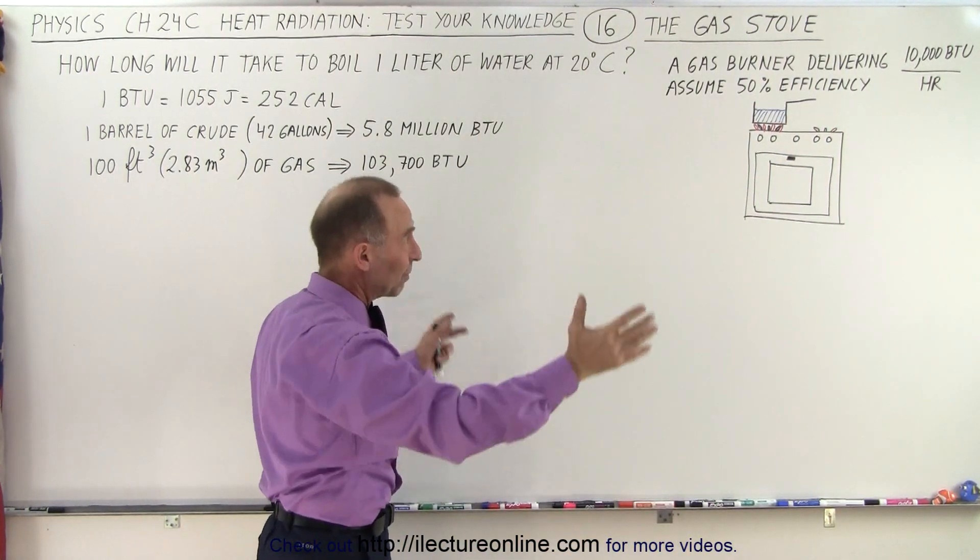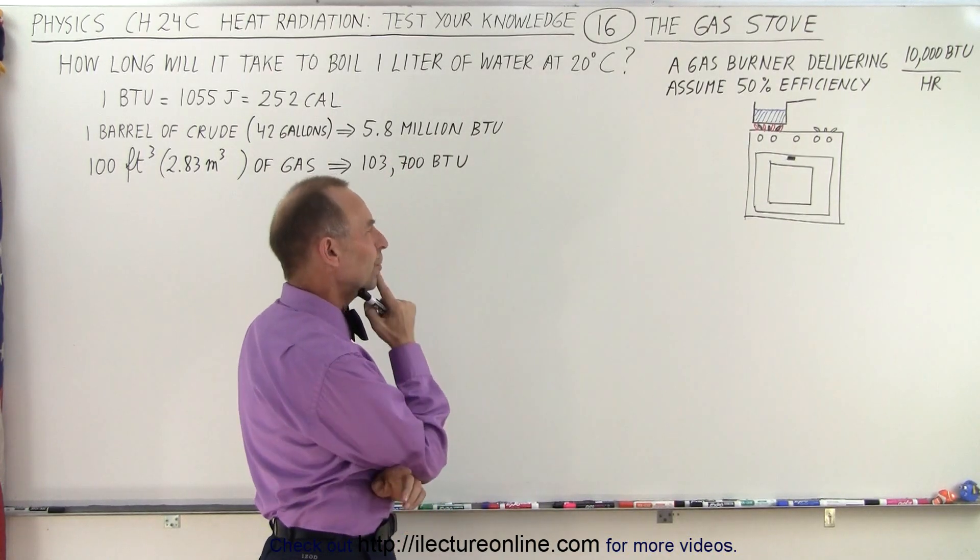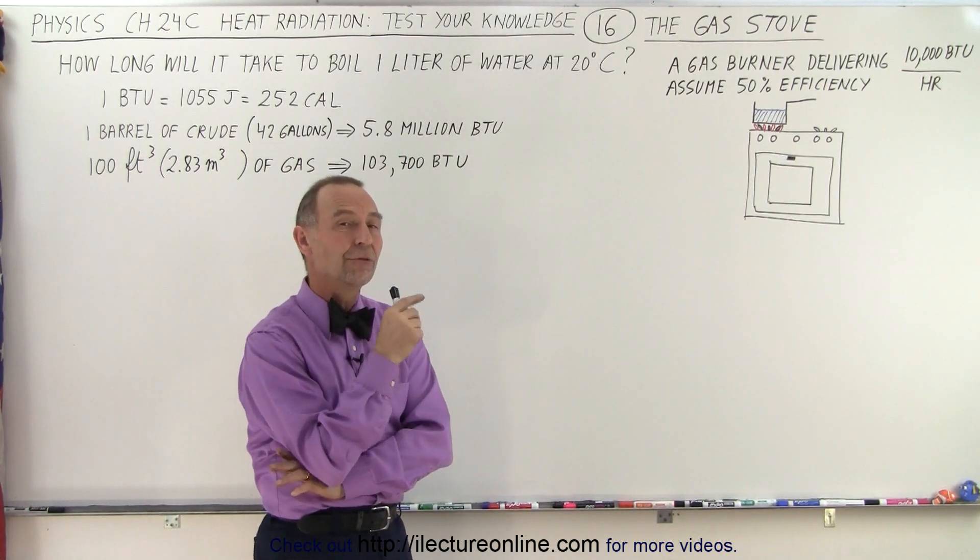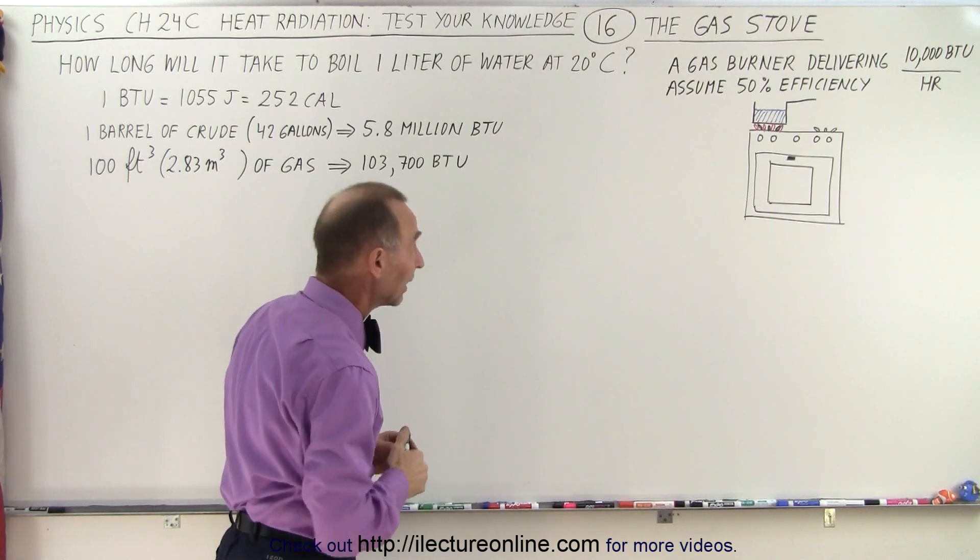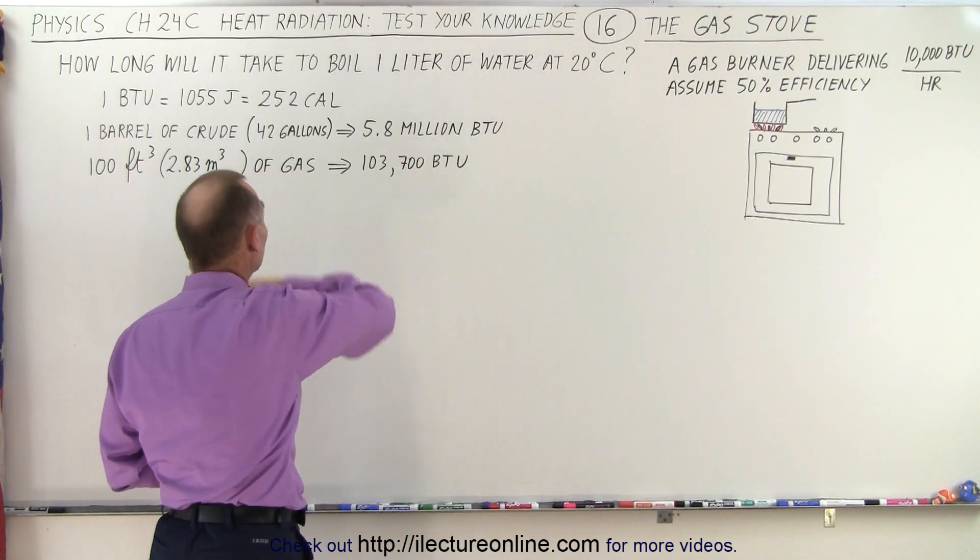Meaning that about 50% of the energy delivered by the burner actually makes it into the water. The other 50% is lost by radiation and heat escaping along the pot. So how long will it take for a burner like this to raise 1 liter of water from 20 degrees Celsius to the boiling point?